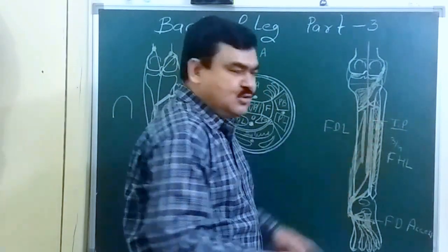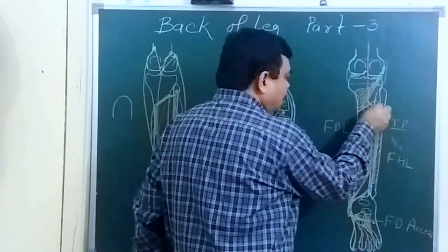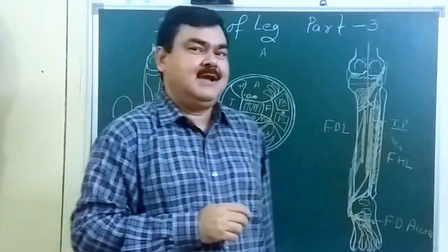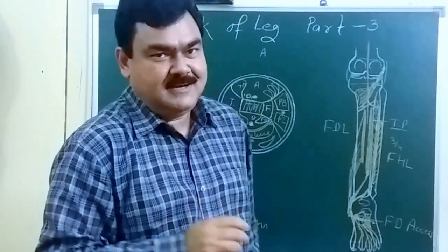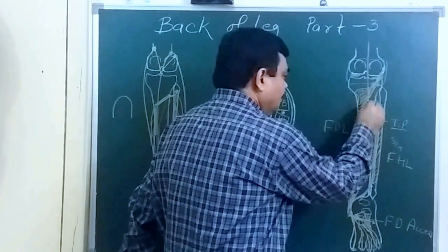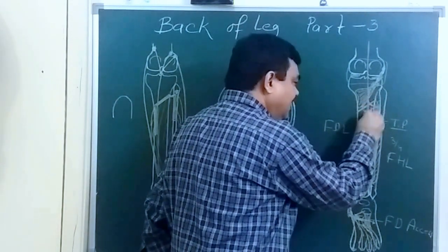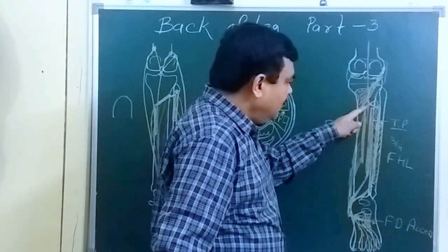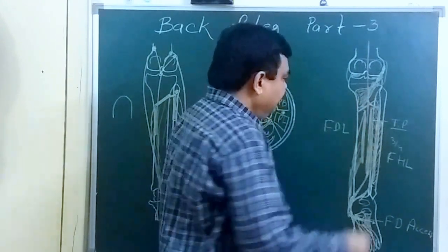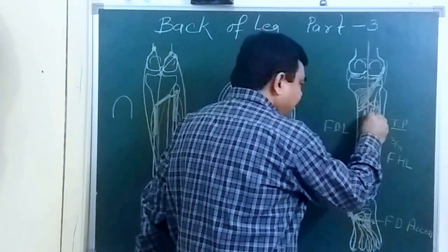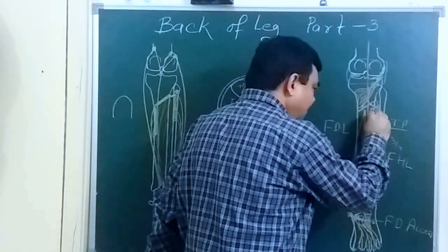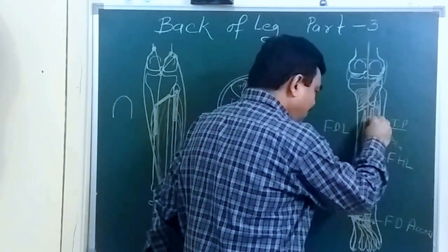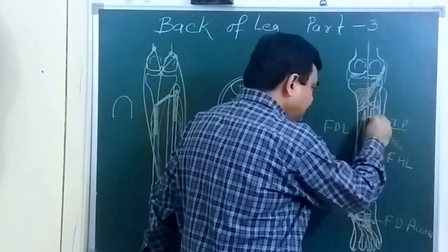The anterior tibial artery pierces the upper part of the interosseous membrane and goes into the anterior compartment of the leg, giving supply to that region. The posterior tibial artery, about 2.5 centimeters below the popliteus muscle, gives a branch towards the lateral side — this is the peroneal artery.